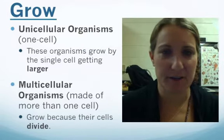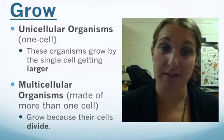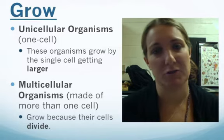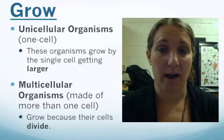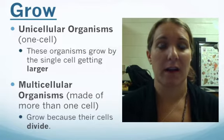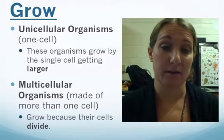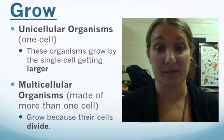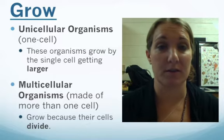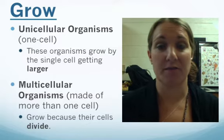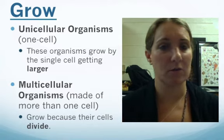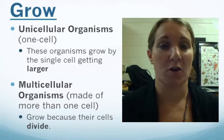The first characteristic we're going to talk about is growth. All living things have to grow, but they're going to grow differently. If you're a unicellular organism, which means you're just one cell, you're only going to grow by that single cell getting a little bit larger. However, if you're a multicellular organism, which is made of lots of different cells like humans, the reason that we grow is because our cells divide. So two ways to grow: either by cells getting larger or cells dividing.